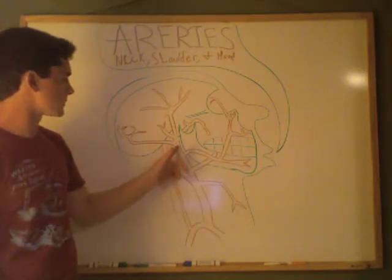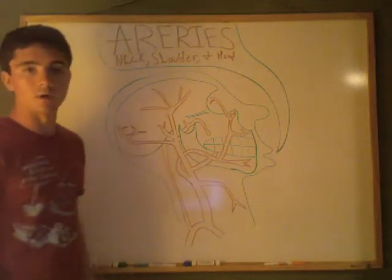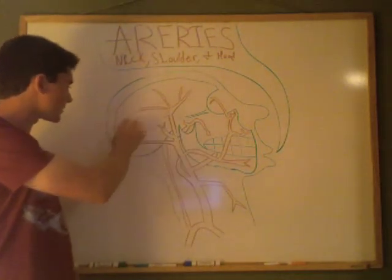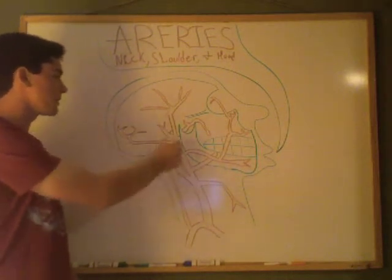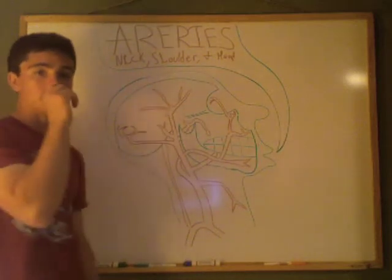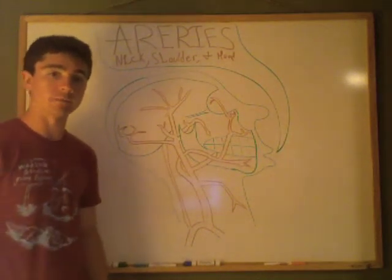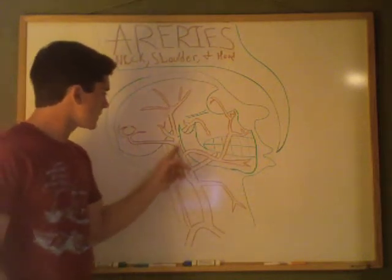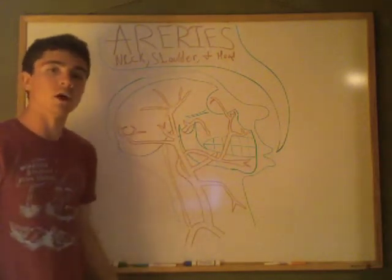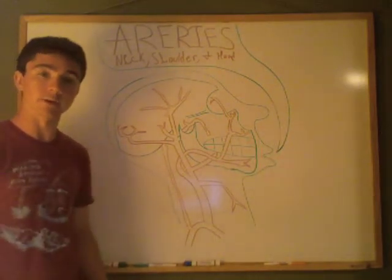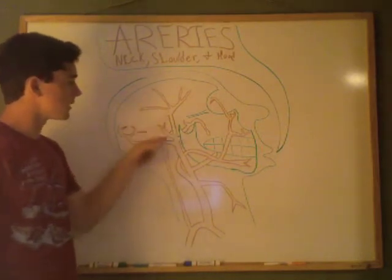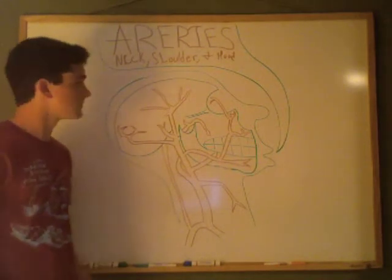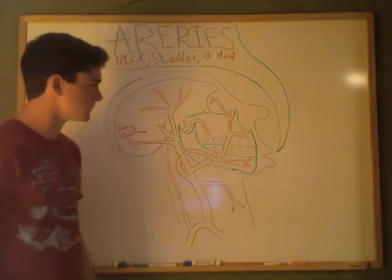Moving upwards, we get to the occipital artery — think of the occipital bone or the occipital lobe of the brain, with blood going there. Above that, we have the maxillary artery, which provides oxygenated blood to the upper roof of the mouth, the palate, and also to the middle ear area. Going up higher, we have the posterior auricular artery, which provides oxygenated blood to the ear. And then, just like with the veins, here is the superficial temporal artery. That covers all the arteries we'll discuss here.